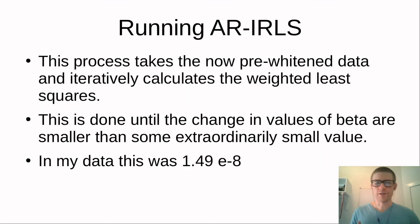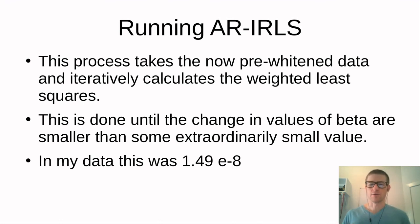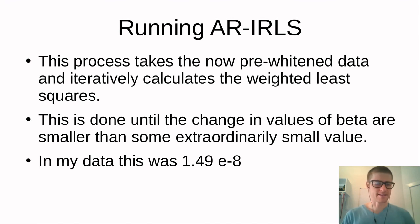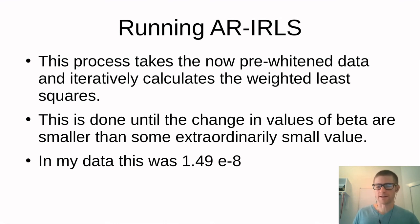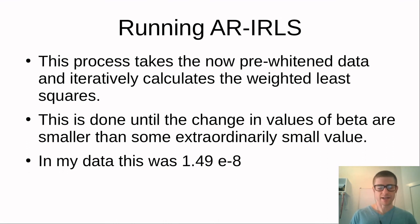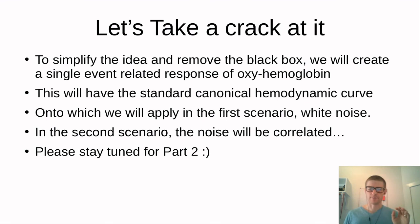Once the pre-whitening filter has been applied and the betas are calculated and adapted to the model, the process continues until the beta values become so small they're essentially non-existent — meaning the time points going further back are unimportant. In one test run, the convergence value was 1.49 × 10⁻⁸, an extraordinarily small number. Results may vary with different datasets.